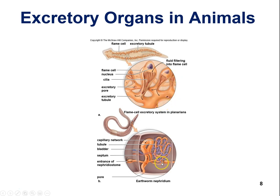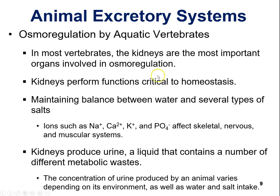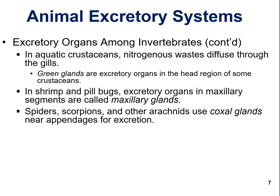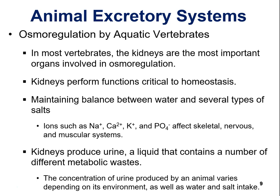The earthworm's nephridium is actually similar in structure to the nephron we'll discuss in humans. You are not responsible for labeling parts of these diagrams — they're just illustrative to show what these different excretory organs look like. Those were the invertebrates: planaria, earthworms, insects, and crustaceans.